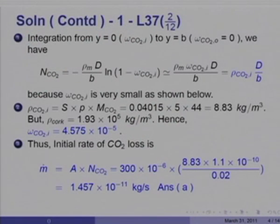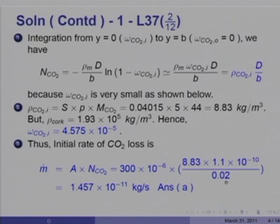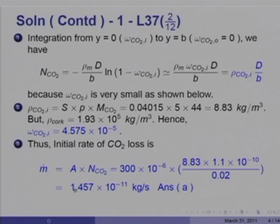The initial rate of mass loss of CO₂, ṁ, equals the area of the cork multiplied by N_CO₂. The area of the cork is 300 mm² = 300×10⁻⁶ m². With ρ_CO₂_i = 8.83 kg/m³, D = 1.1×10⁻¹⁰ m²/s, and δ = 20 mm = 0.02 m, the initial rate of mass flow is 1.457×10⁻¹¹ kg/s.